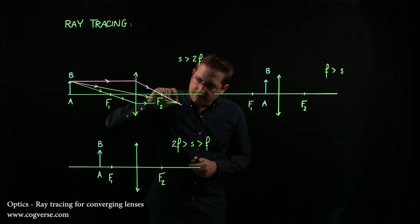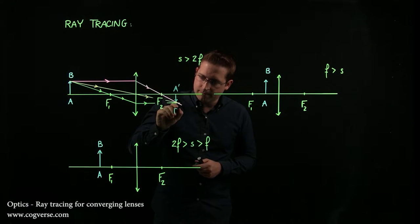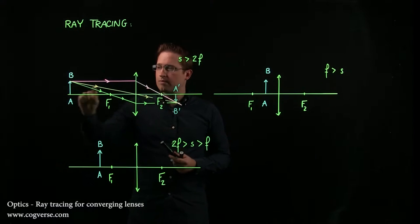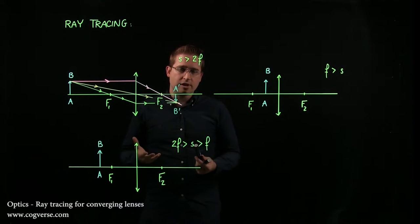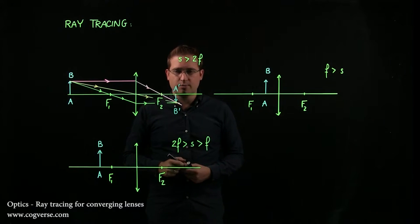Therefore, A'B' is right here. It is a reduced image, an inverted image, and a real image because light actually converges at this point.